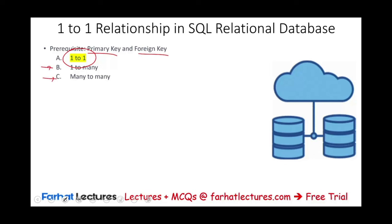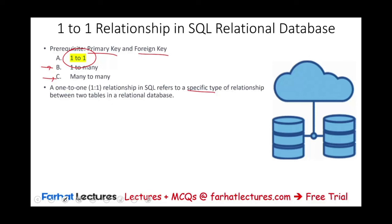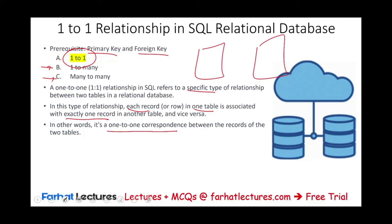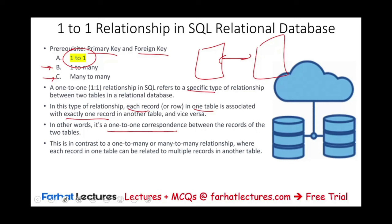A one-to-one relationship is a specific type of relationship between two tables in a relational database. It means each row or record in one table is associated only and exactly with one record in another table, and vice versa. Simply put, it's a one-to-one correspondence between the records of the two tables. This contrasts with one-to-many and many-to-many relationships, where each record in one table can be related to multiple records in another table.